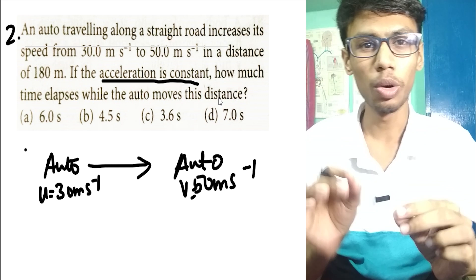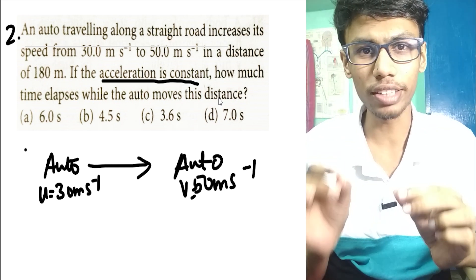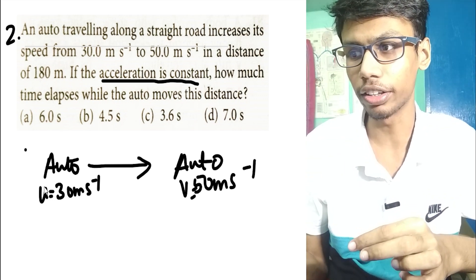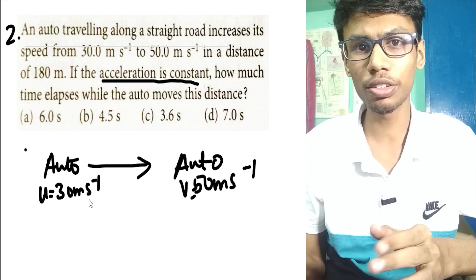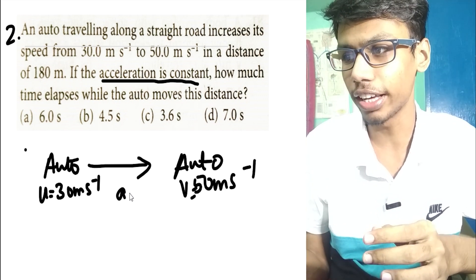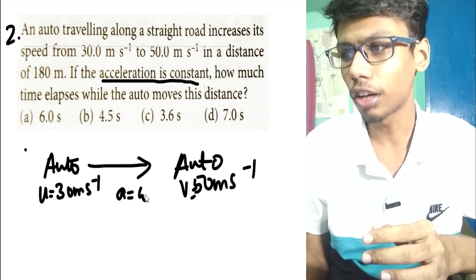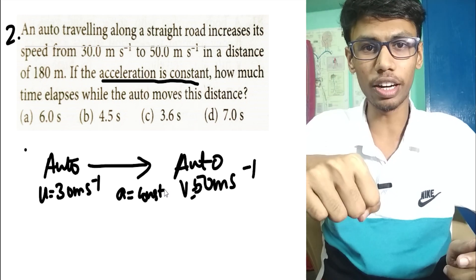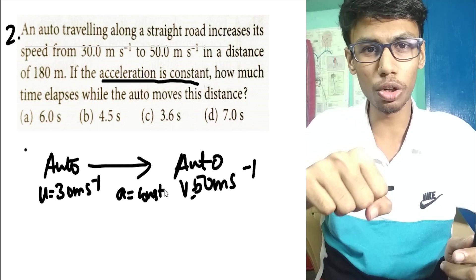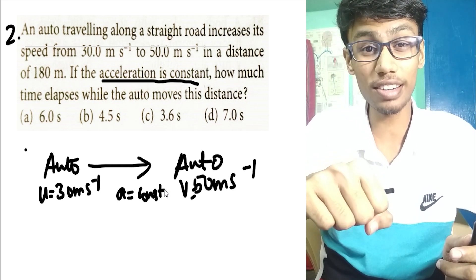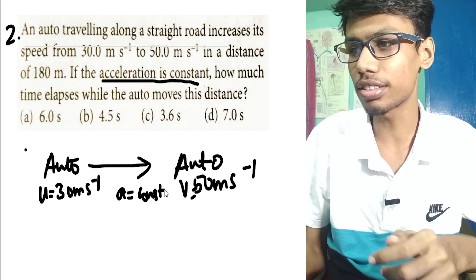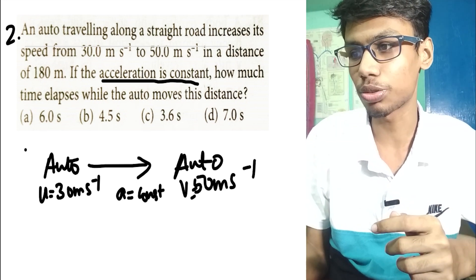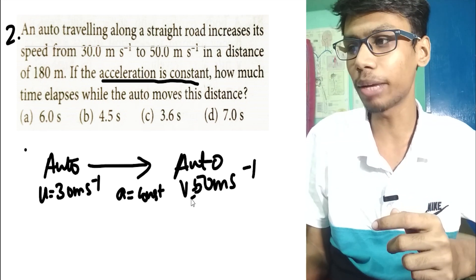Let me explain it. The auto has an initial velocity u equal to 30 ms⁻¹, with one constant acceleration — meaning the auto moves with correct constant acceleration. The velocity goes from 30 ms⁻¹ to 50 ms⁻¹.